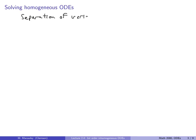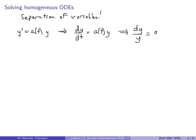Now, how do we solve homogeneous differential equations? We've seen this — we separate variables. Let's write this out. Suppose we have y' = a(t)·y — that's our homogeneous equation. We write this as dy/dt = a(t)·y. Separating variables means we put the y's on one side: dy/y, and we put the t's on the other side: a(t) dt.